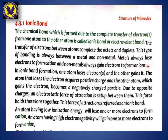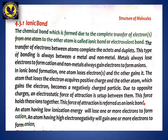In ionic bond formation, one atom loses an electron and the other gains it. The atom that loses the electron acquires a positive charge, and the atom that gains the electron becomes a negatively charged particle. Due to opposite charges, an electrostatic force of attraction is set up between them. This force holds the ions together, and this force of attraction is referred to as an ionic bond.